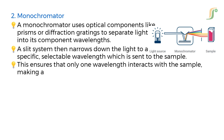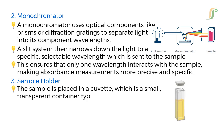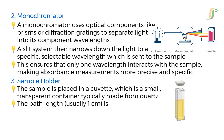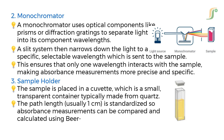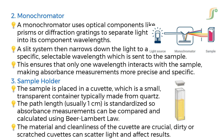This ensures that only one wavelength interacts with the sample, making absorbance measurements more precise and specific. The sample is placed in a cuvette, which is a small, transparent container typically made from quartz. The path length, usually 1 cm, is standardized so absorbance measurements can be compared and calculated using Beer-Lambert law. The material and cleanliness of the cuvette are crucial — dirty or scratched cuvettes can scatter light and affect results.